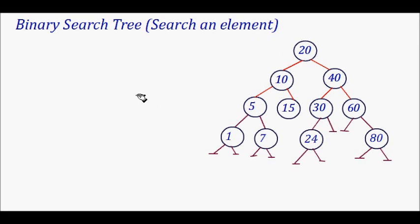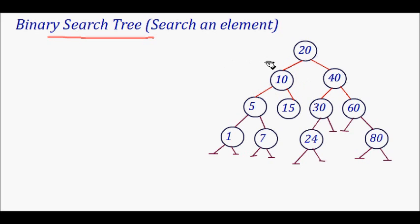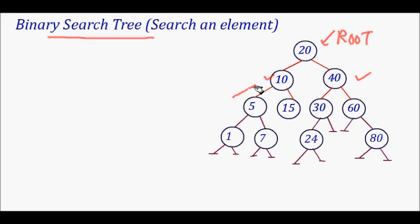In this lecture we are going to learn about searching an element in a binary search tree. A primer about binary search tree: it's a tree which can have a maximum of two children. This is the root of the tree, and these are the nodes of the tree. Each node can have a maximum of two children — this is the left child and this is the right child.